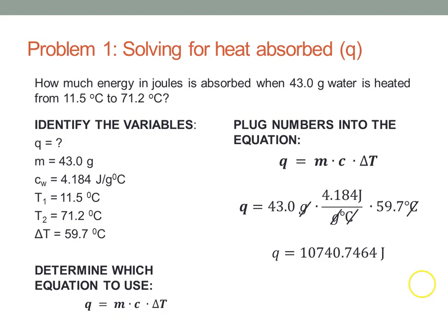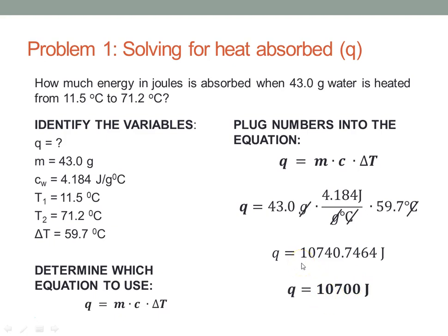That has way more significant digits than we need. Looking at our problem, all our variables had three significant figures. So Q will be rounded — counting from the left, the third significant digit is the 7, and the digit after it is a 4. Since 4 and below we let it go, our answer rounds to 10,700 joules.